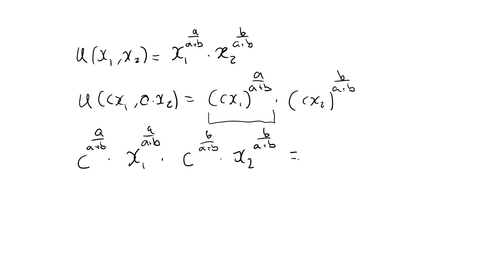Now you can probably see how this goes. If I multiply these terms, all I need to do is to add the exponents, so that's c raised to (a over a plus b plus b over a plus b) times x1 raised to a over a plus b times x2 raised to b over a plus b. Well, this exponent here, that's just a plus b over a plus b, so that's just one.